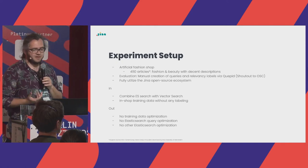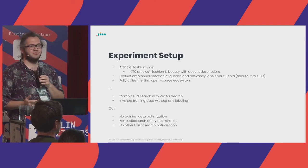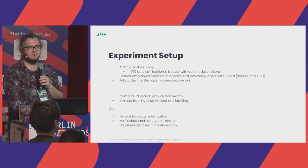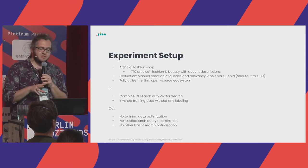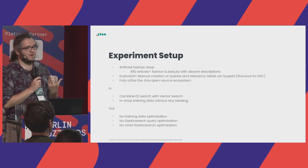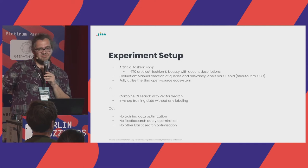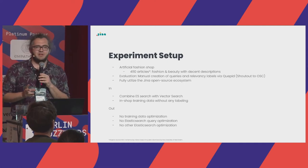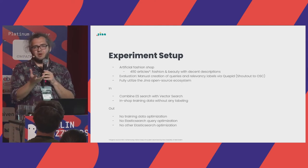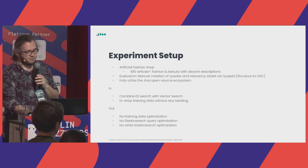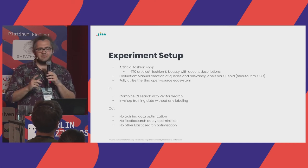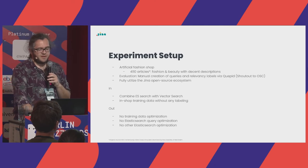For evaluation we created our own queries and relevancy labels using Cupid — a really cool tool for relevance scoring. We fully utilized the Jina open source ecosystem and tried to combine traditional Elasticsearch with vector search. We only used in-shop training data — no click data or other artificial data — just the images and text that exist inside the shop. We also did no training data optimization, no Elasticsearch query optimization or boosting factors, and no custom analyzers — just plain out-of-the-box Elasticsearch.